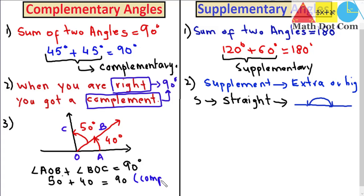It is not necessary that complementary angles must be adjacent to each other. However, if they happen to be adjacent, they will form a right angle. In this case, the 40 and 50 degree angles are adjacent to each other, sharing the same line, so they form a right angle and are also called adjacent angles.